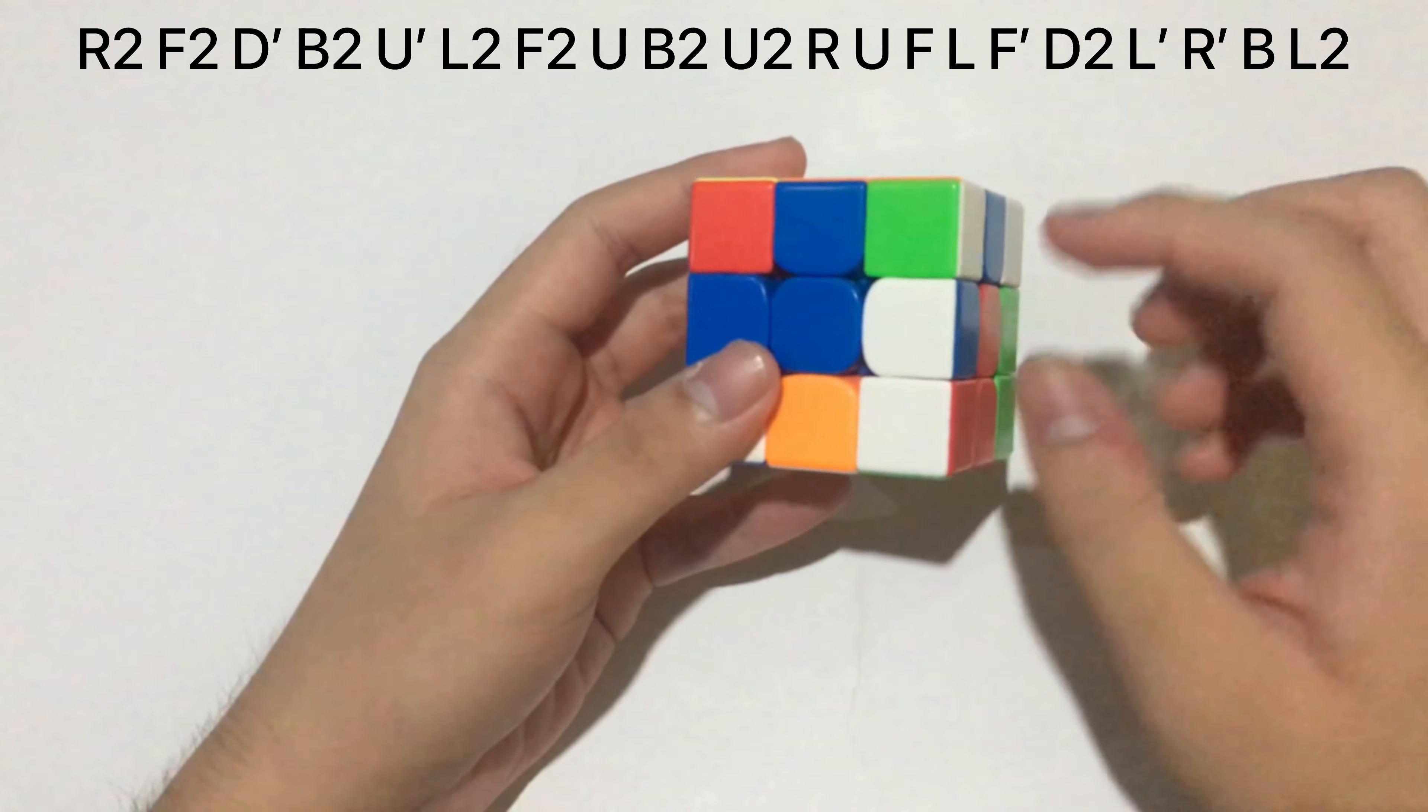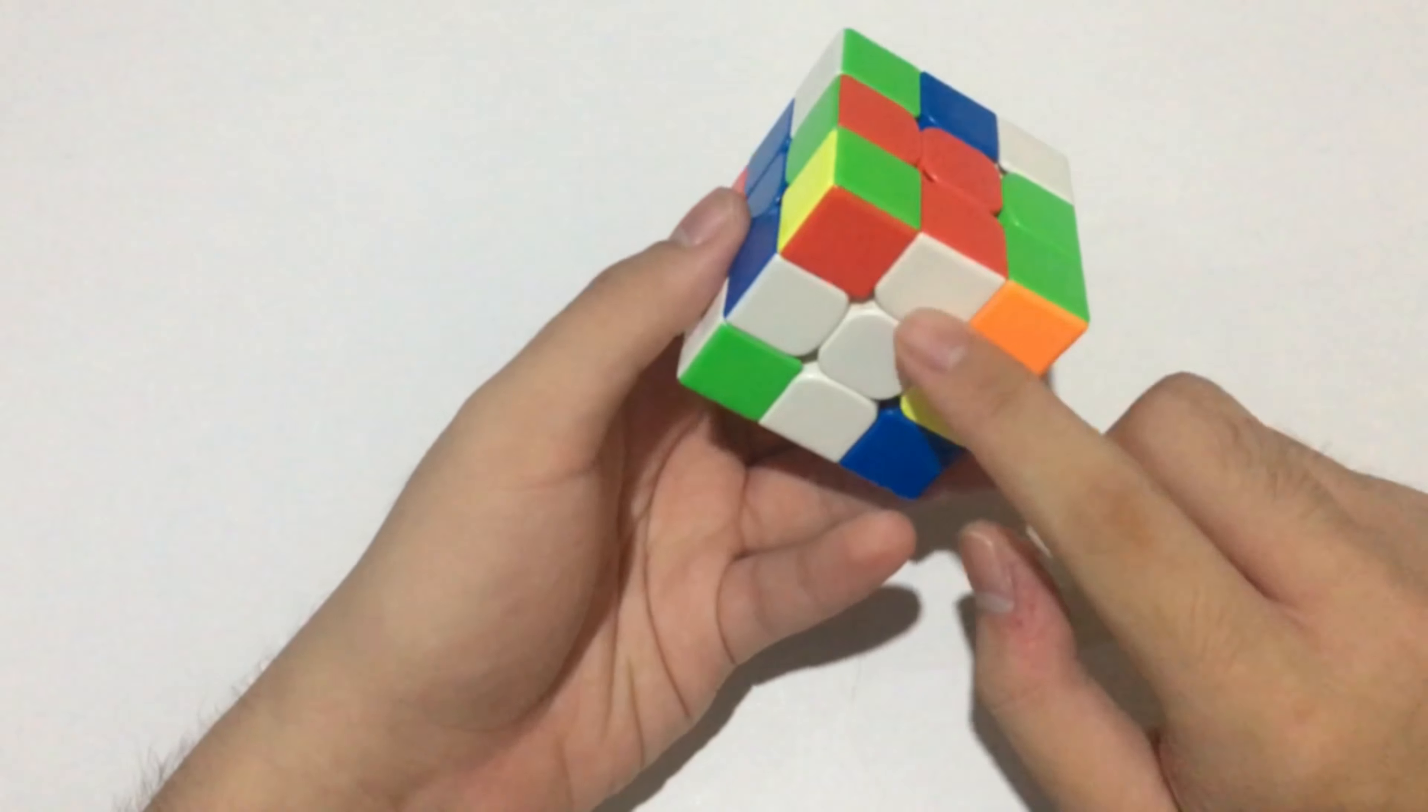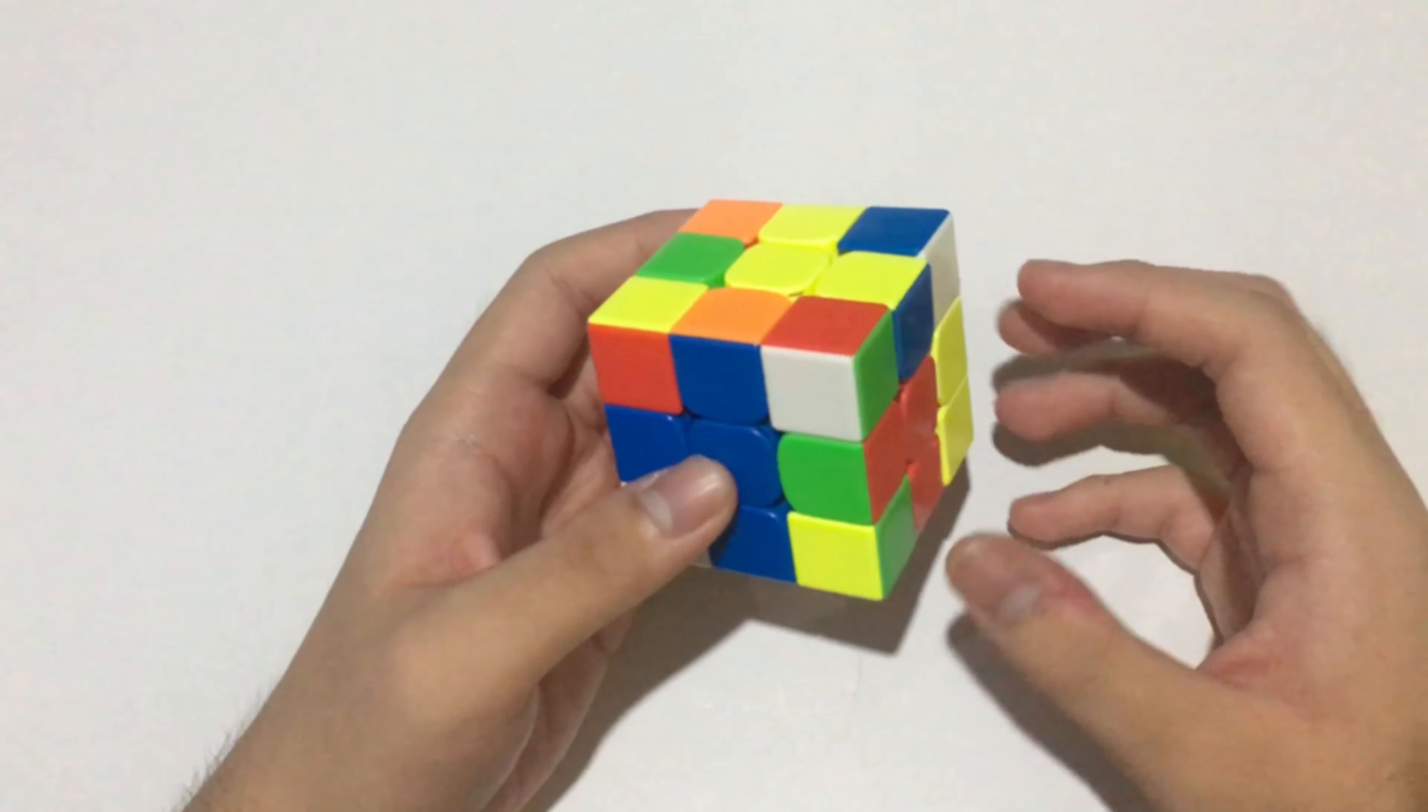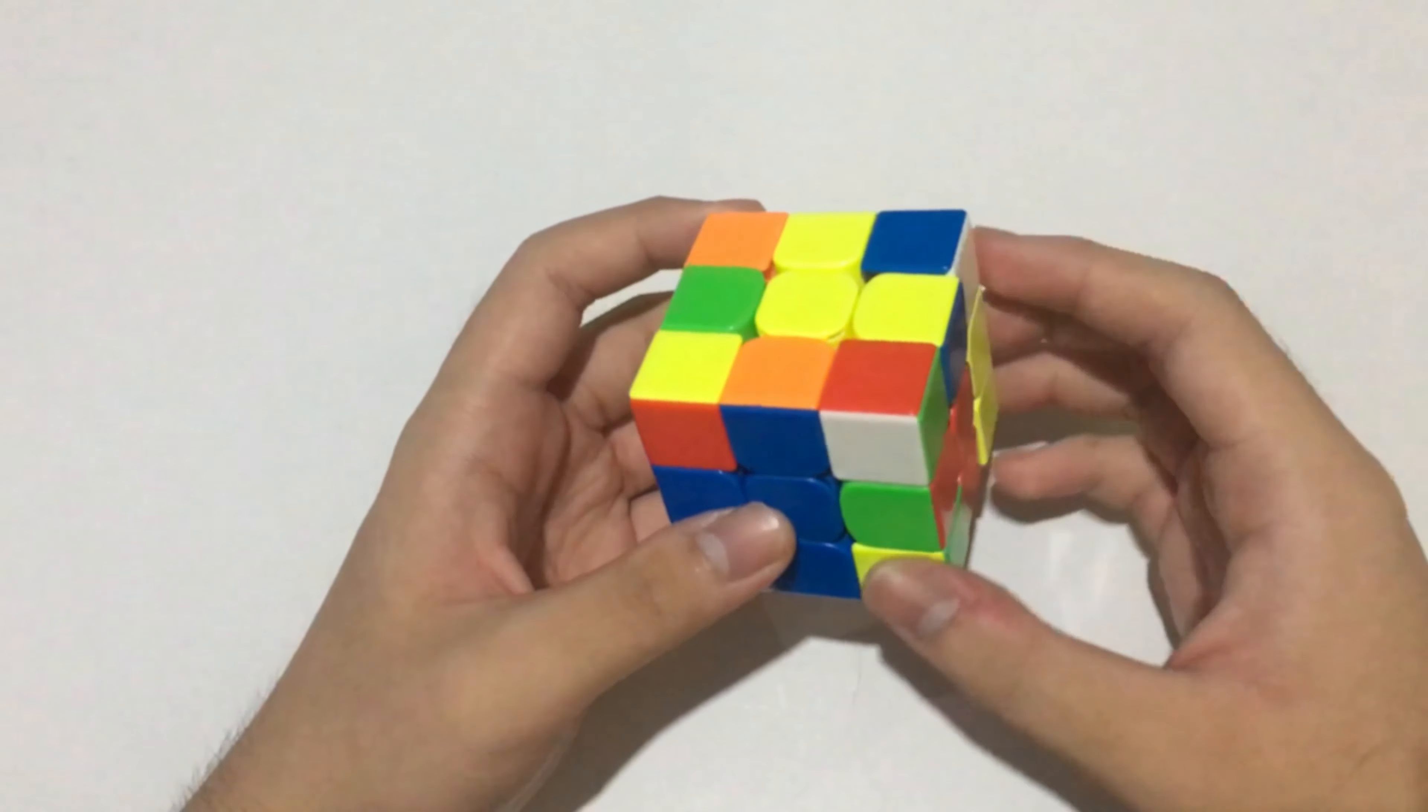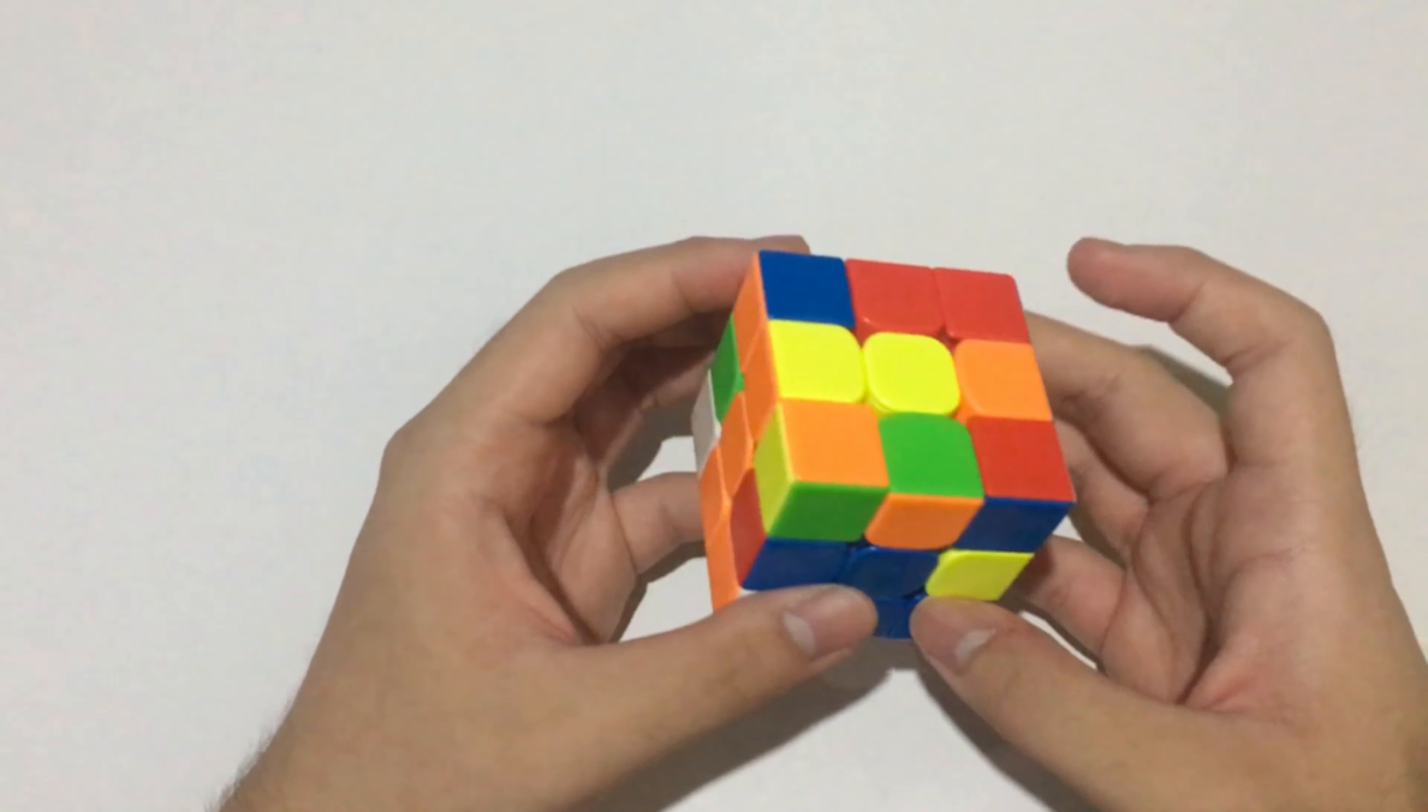What I did was solve this blue and white first, D prime R to solve this white and red, B2. I forgot to mention that I also tracked my first pair, which is this Christmas pair. I inserted it like so.